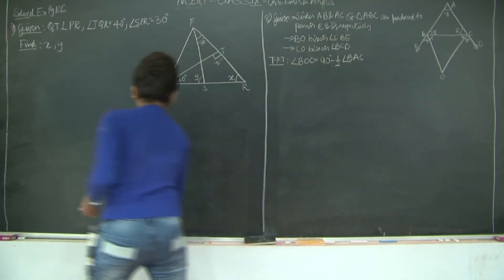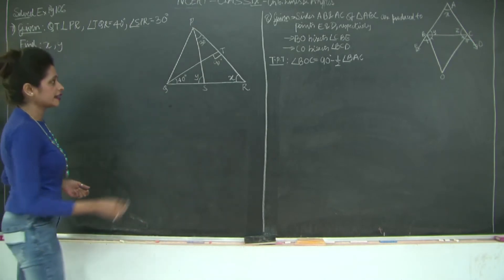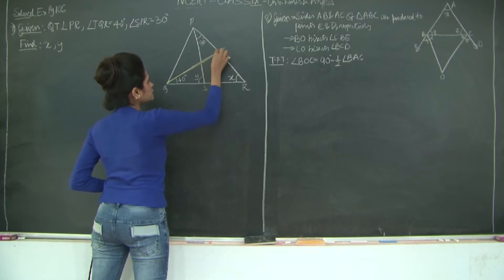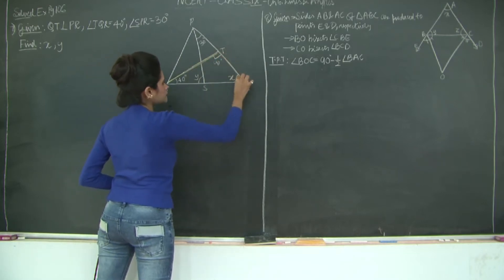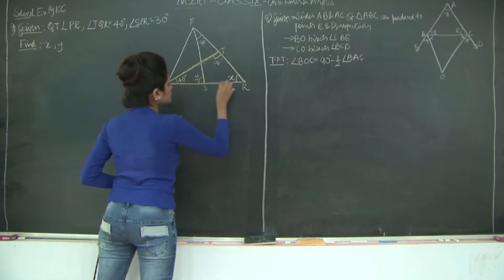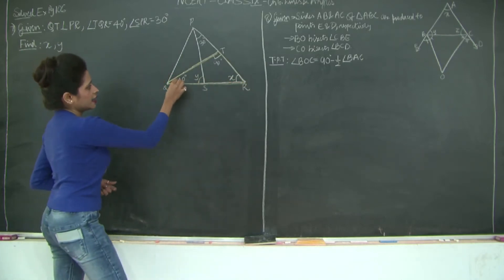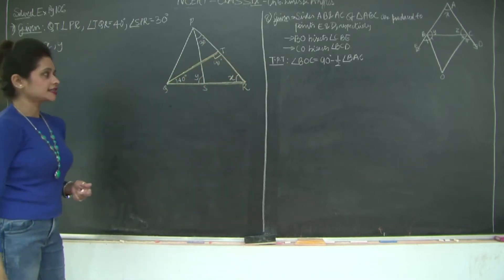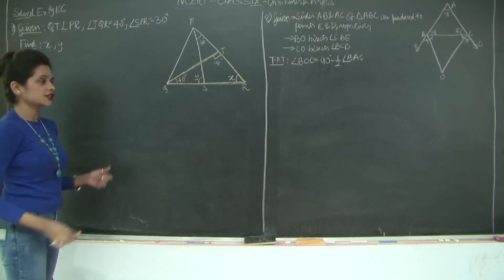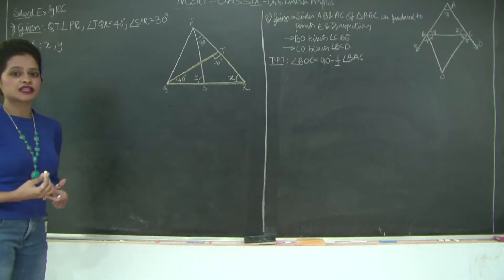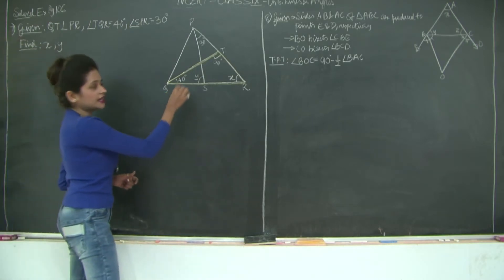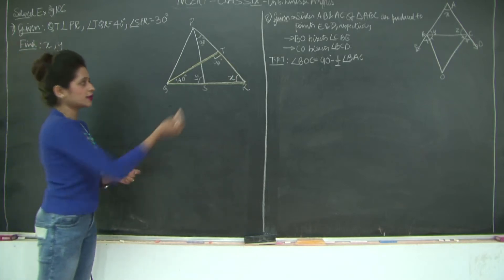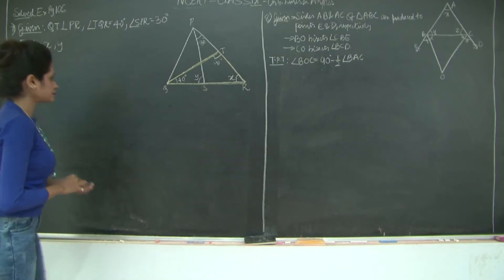We'll first find the value of angle X. Taking this triangle into consideration: angle Q plus angle T plus angle R is equal to 180 degrees, because the sum of angles of a triangle is 180 degrees — Theorem 6.7 from the previous class. So substituting: 40 plus 90 plus X equals 180 degrees.